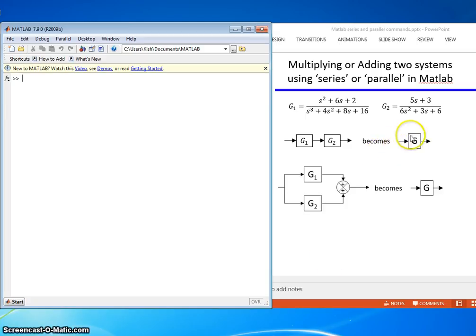A case where you want to multiply systems: if you want to form one system G from the series of G1 and G2, we would actually have to multiply these two systems together.